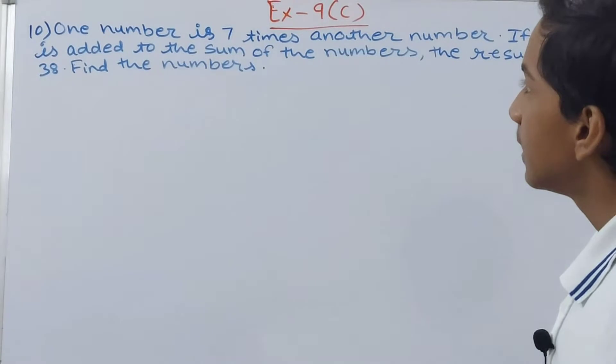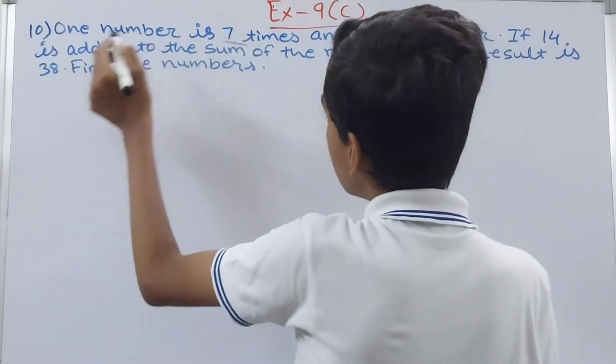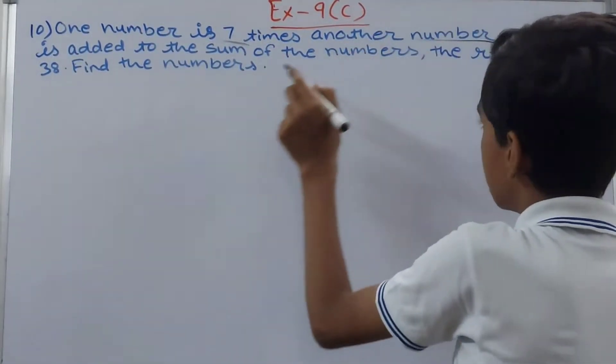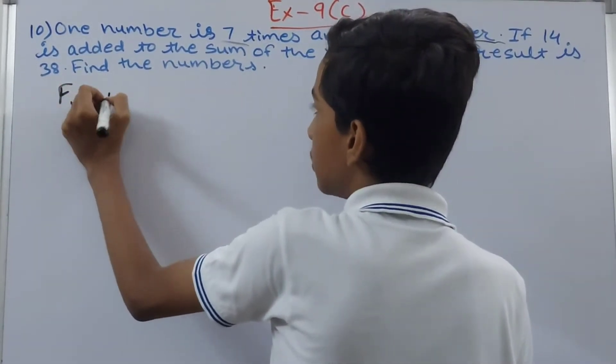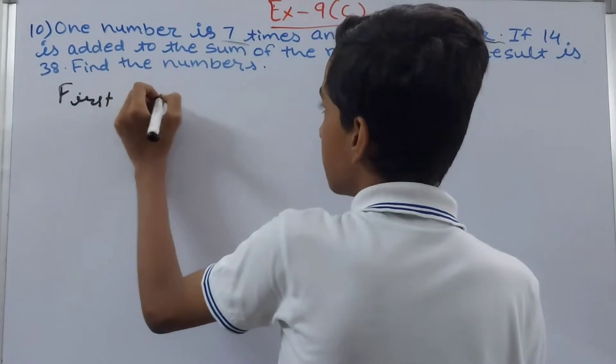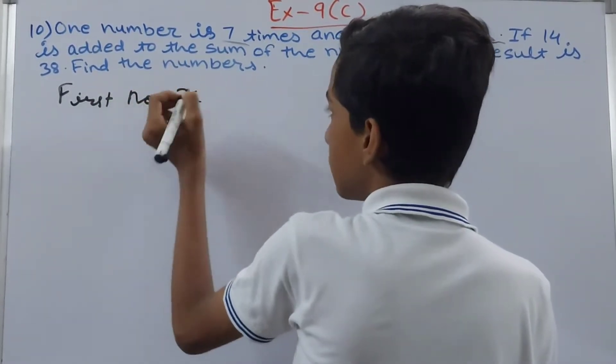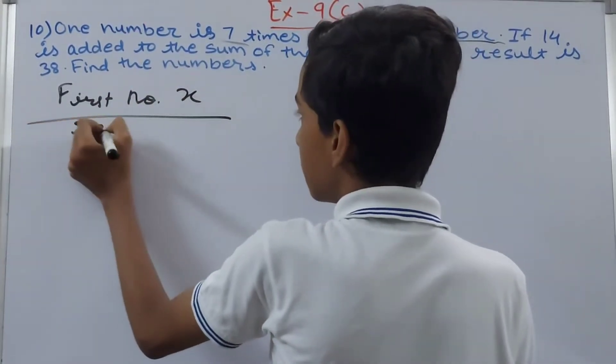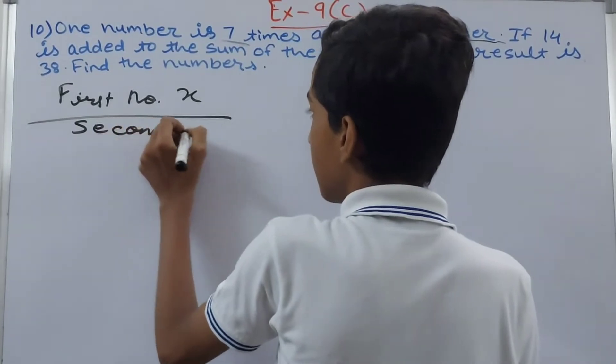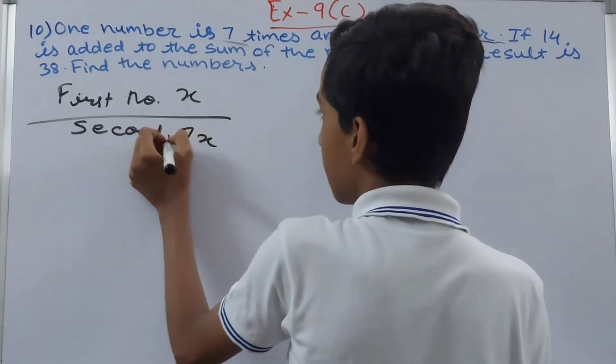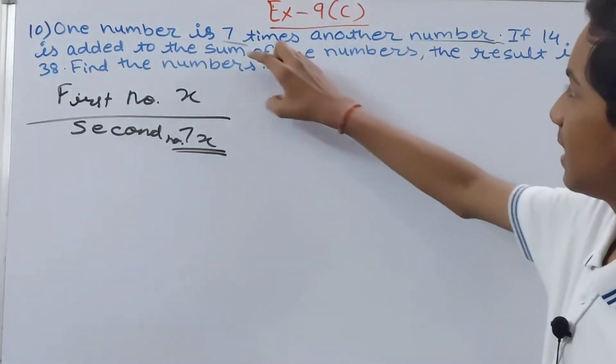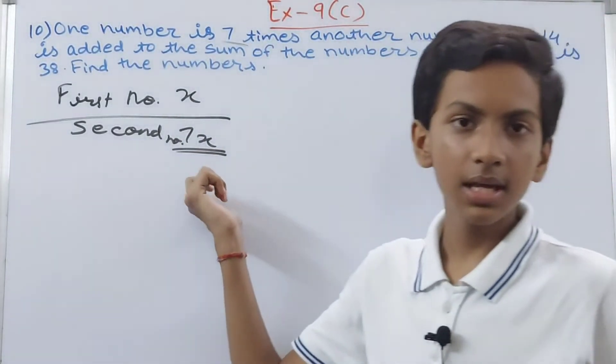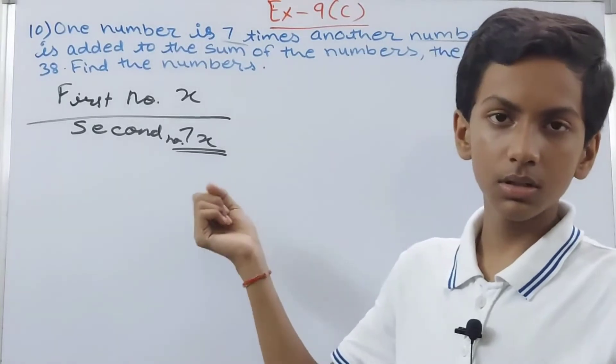We can say that if our one number is seven times the another number, the first number will be assumed as x. You can write here first number is x. And second number will be 7x. Why 7x? Because seven times another number, seven times x that is the first number, is 7x.